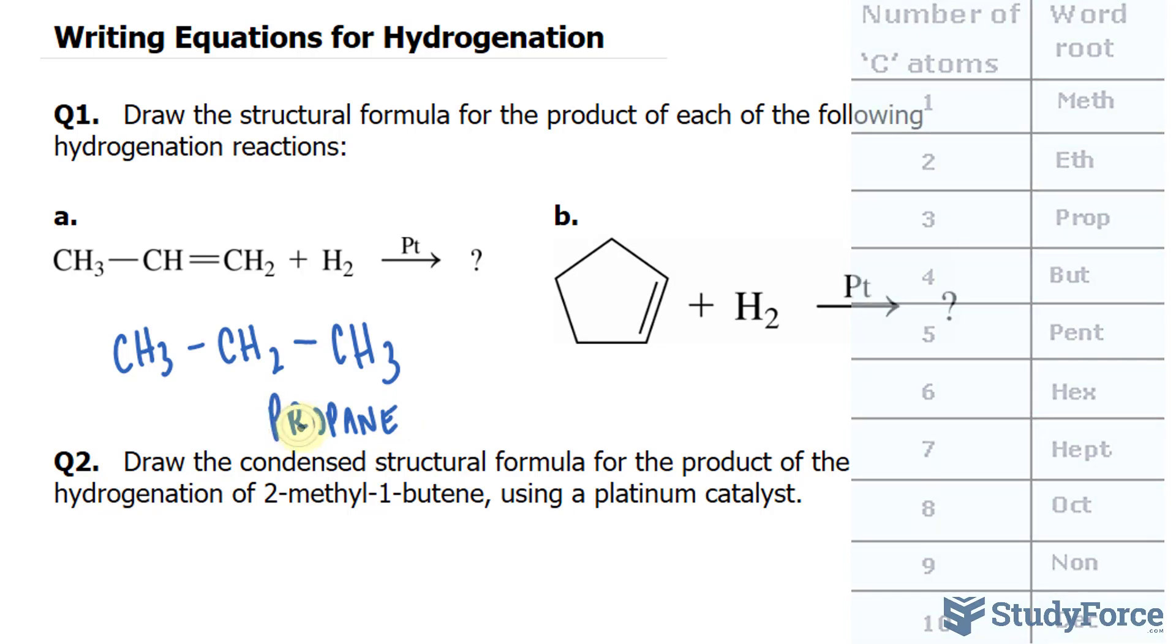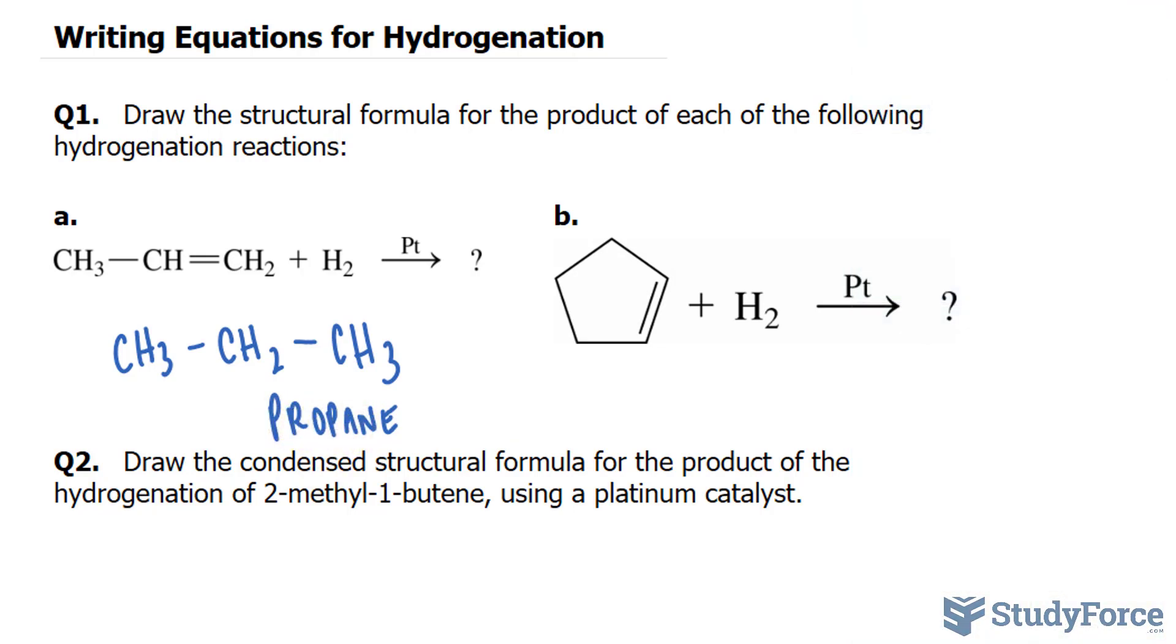Part B. For part B, we have this cyclical structure and we have a double bond right here. In the presence of hydrogen gas and platinum, we will lose this double bond forming a cyclical structure known as cyclopentane.